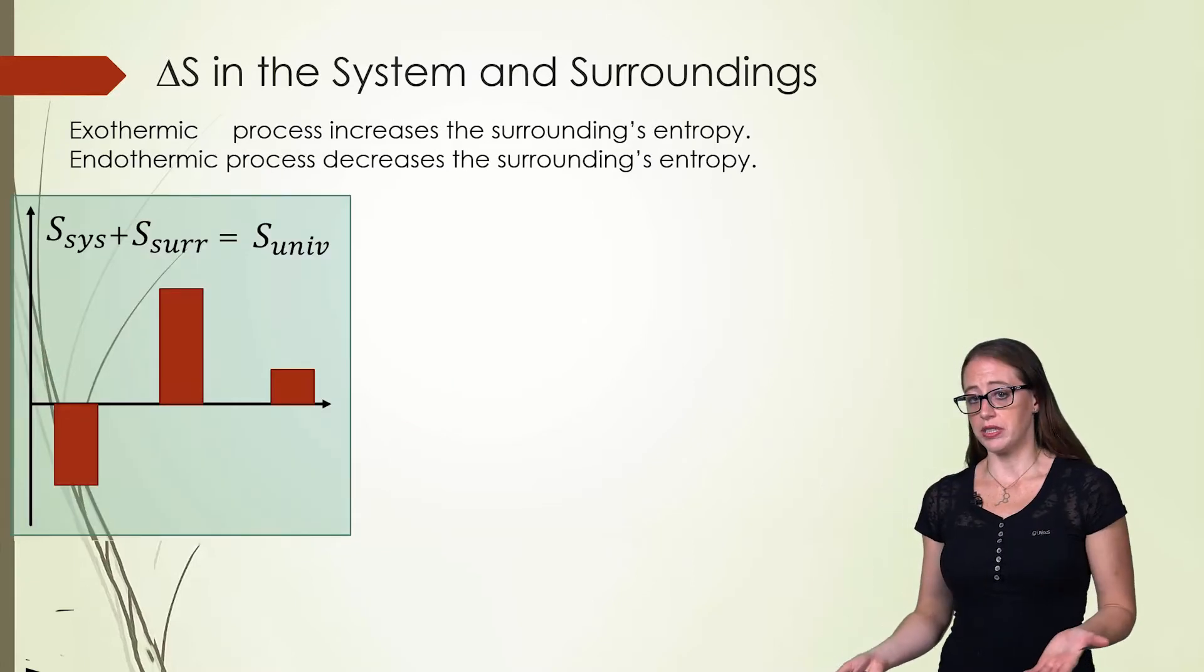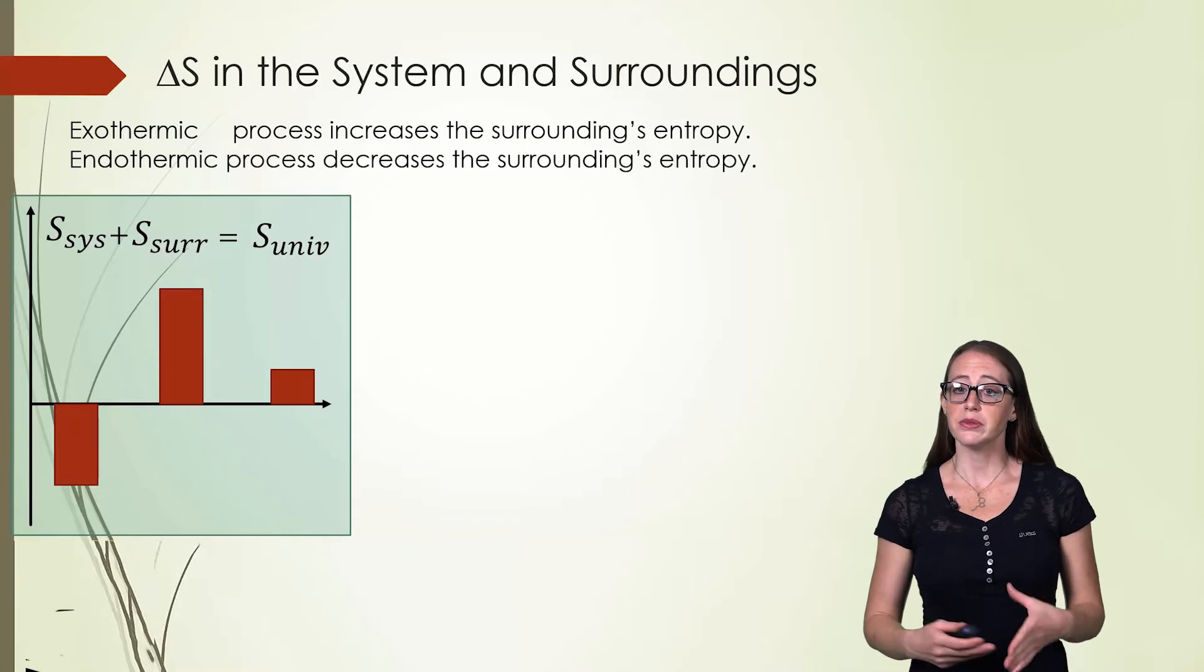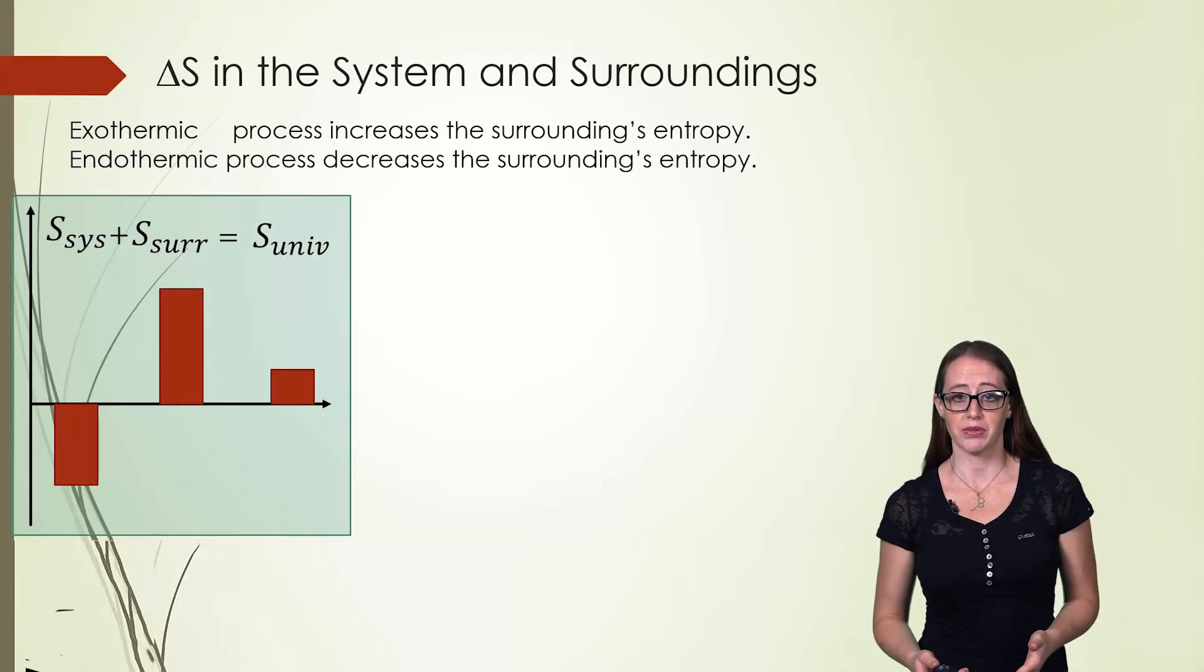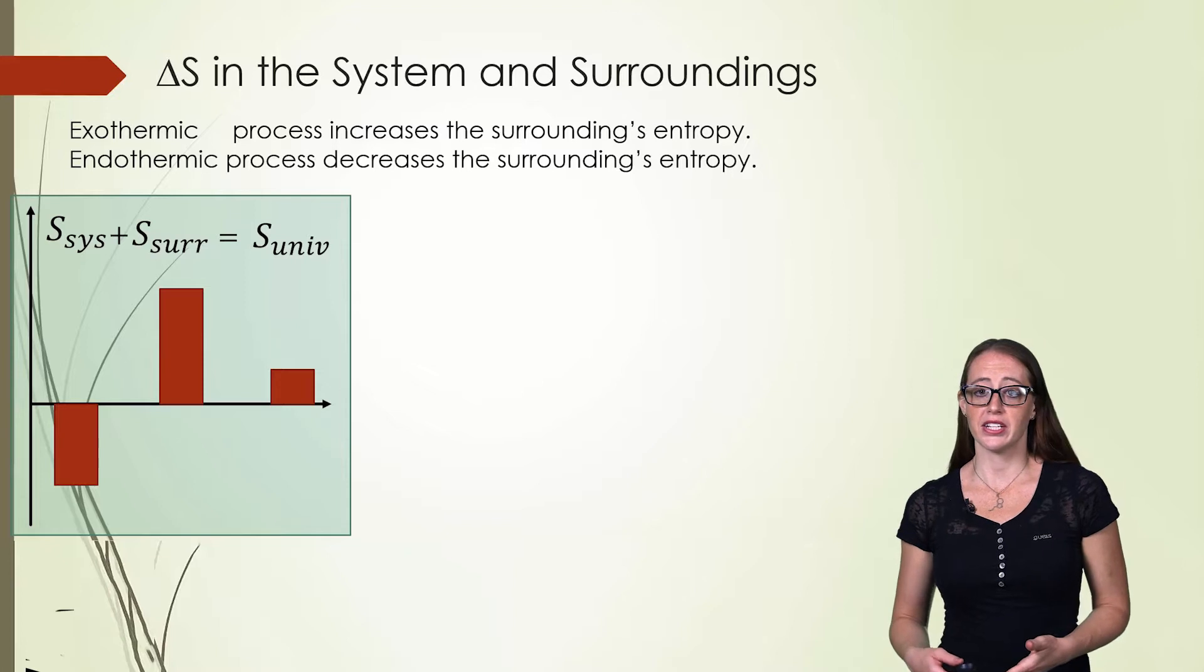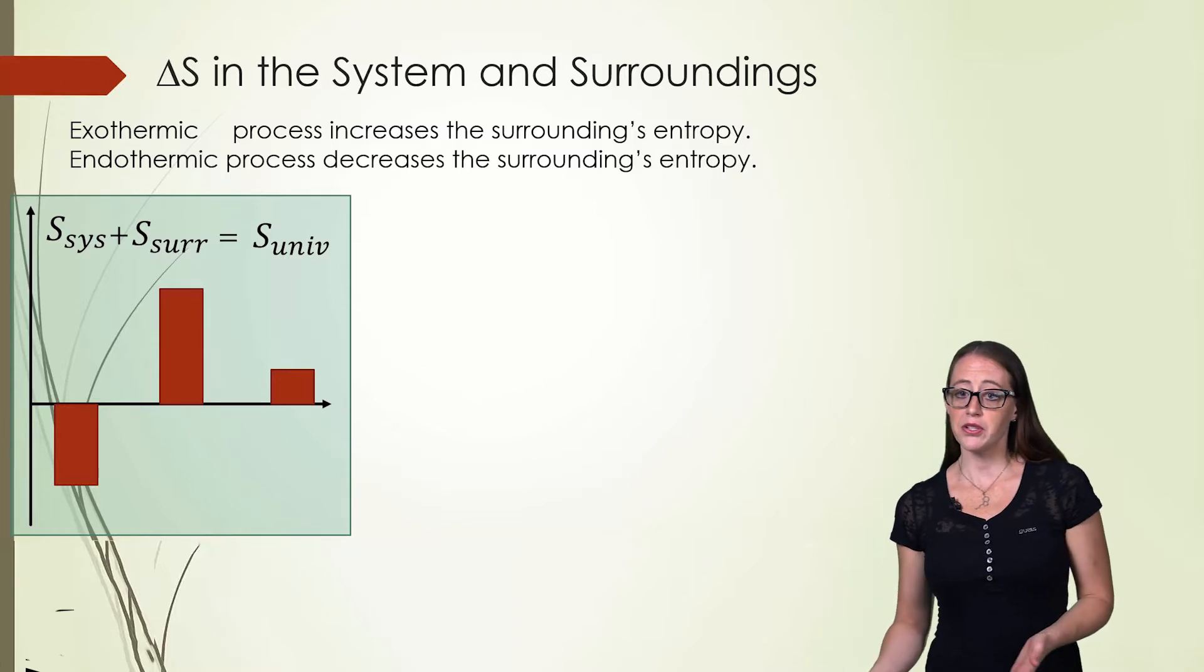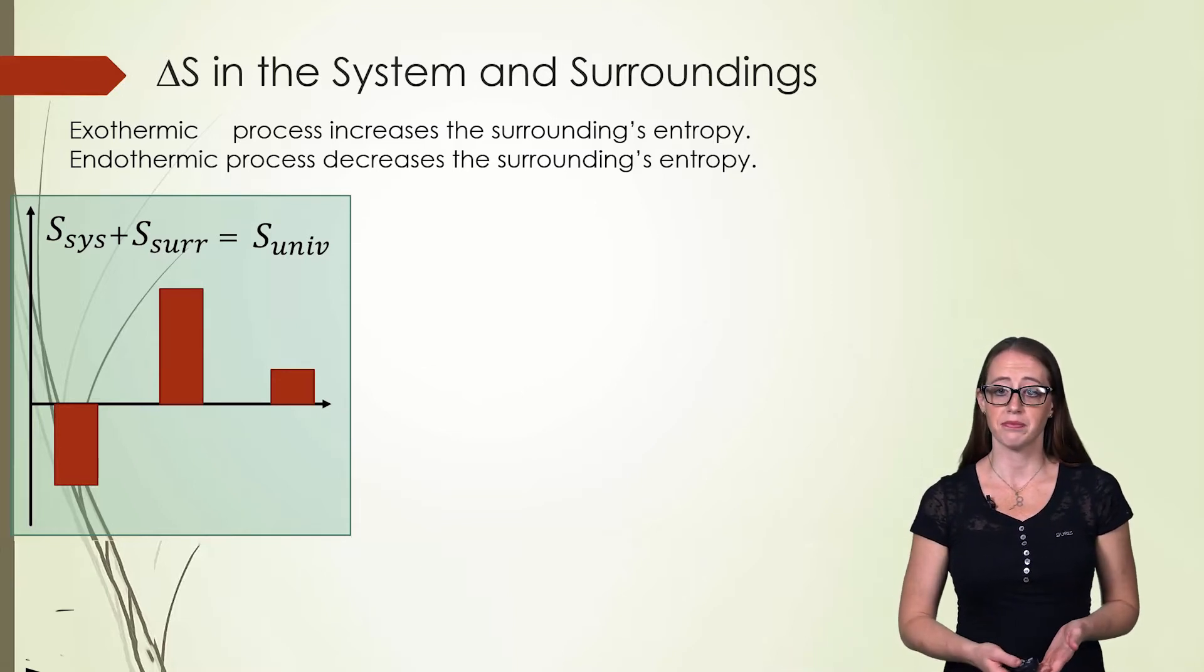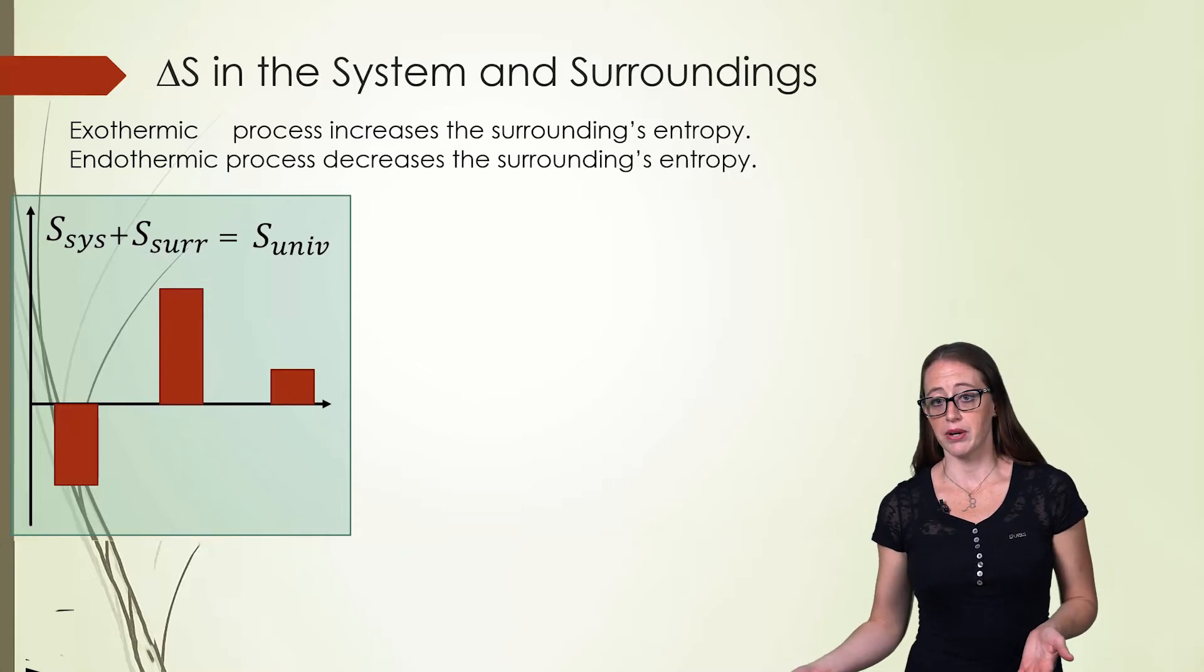These are also related to enthalpy. If a process is exothermic it releases energy into the surroundings. This increasing energy of the surroundings increases the surroundings entropy. Similarly an endothermic process brings energy from the surroundings into the system. This will generally decrease the energy of the surroundings decreasing the surroundings entropy.